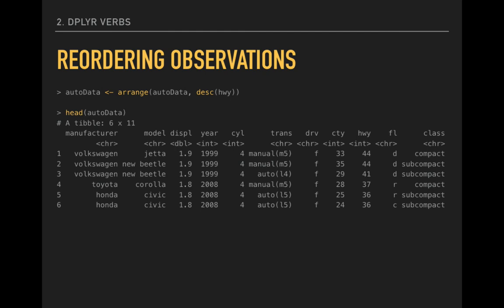If we want to put the most fuel efficient vehicles first, we can do that using the descending function, spelled D-E-S-C. Now the Volkswagen and Japanese cars with exceptionally high gas mileage are the first observations.